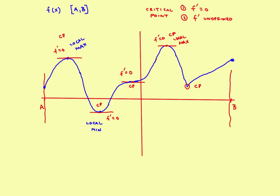The extreme values are the absolute maximum and the absolute minimum. You might have two local maximums, but the biggest one in the interval is the absolute maximum — it's the highest value of the function in the entire interval. Similarly, the lowest value of the function in the entire interval is the absolute minimum.